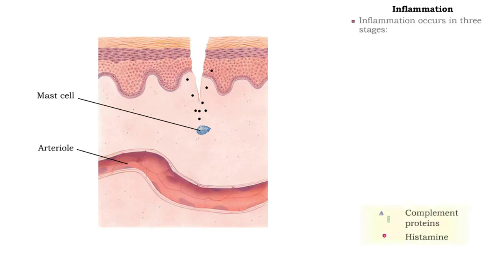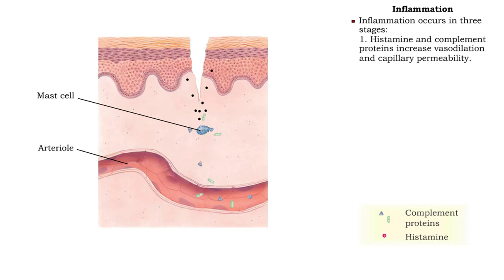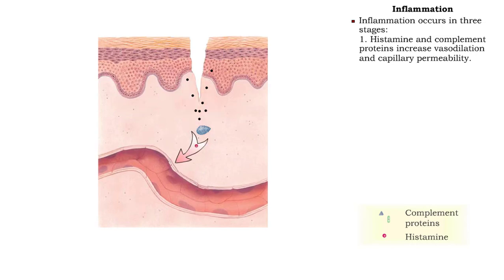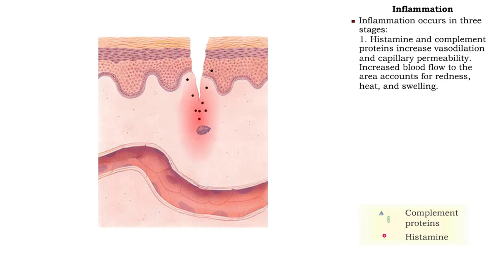The mechanism of inflammation occurs in three stages. The first stage of the inflammatory response, vasodilation, and increased blood capillary permeability, is triggered by histamine released by mast cells and basophils. An increased amount of blood flowing to the area produces redness, heat, swelling, and irritation.